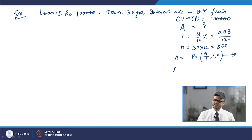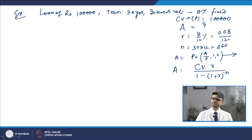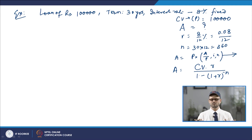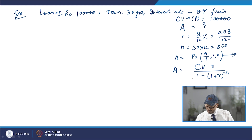Alternatively, A = CV × r / [1 − (1 + r)^(−n)]. Putting CV = ₹1,00,000, r = 0.08/12, and n = 360, the monthly payment A comes out to be ₹733.76. This means you have to pay ₹733.76 every month for 30 years to repay the loan of ₹1 lakh.